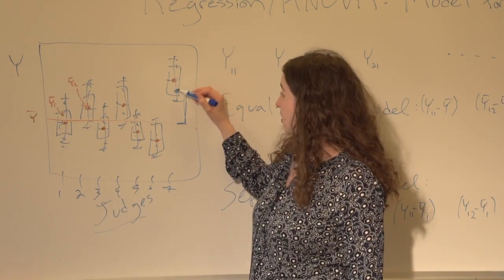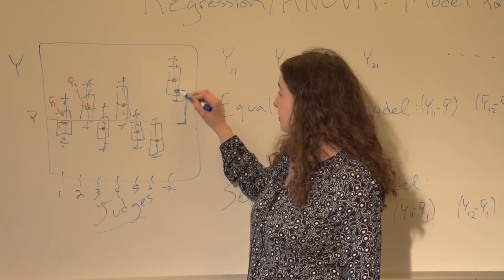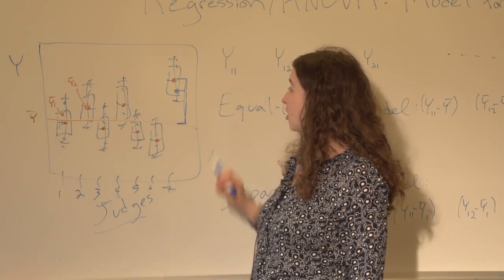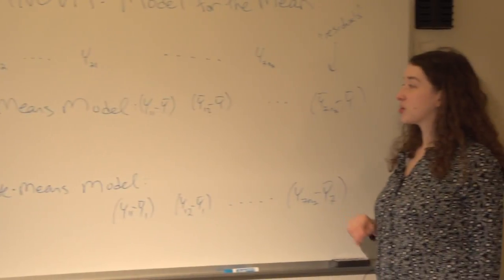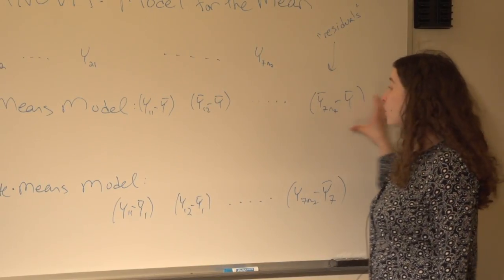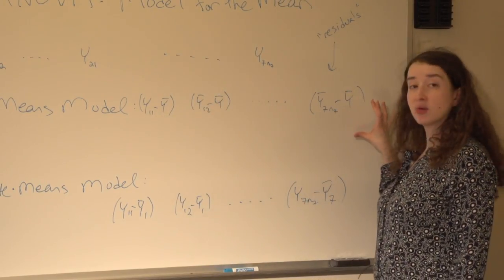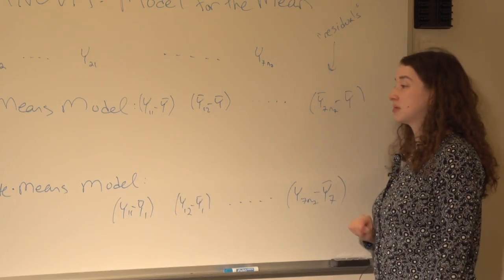The residual for the separate-means model is how far this point is from the mean in the seventh group. It's much smaller. So the overall idea, if we want to assess which model is more appropriate, is to compare overall how do these residuals from the equal-means model compare to these residuals from the separate-means model.